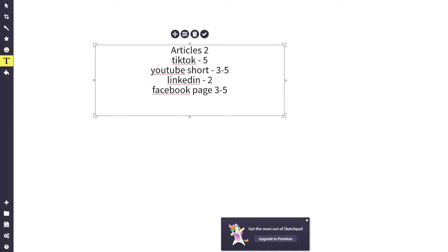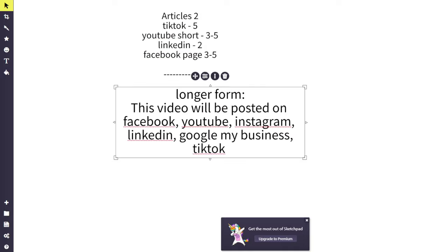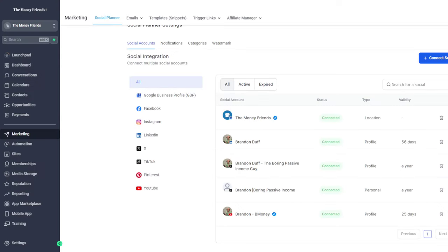Per day, the typical output is: two articles, TikToks, five YouTube shorts, three to five LinkedIn posts, and two to three Facebook posts — that's about 16 pieces of content based on what we've done so far. This video itself will be posted on Facebook, YouTube, Instagram, LinkedIn, and Google My Business.